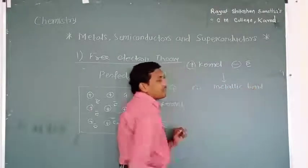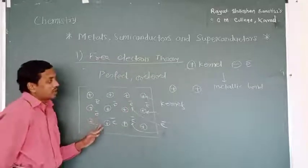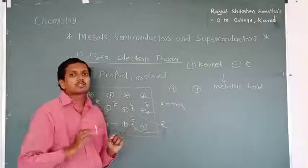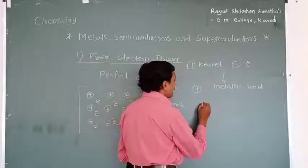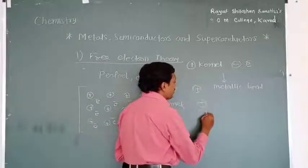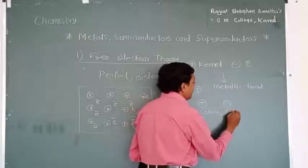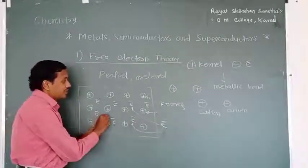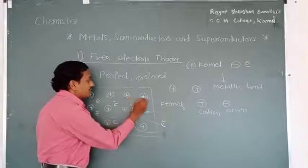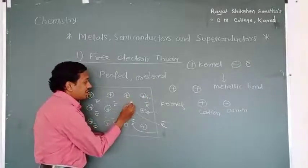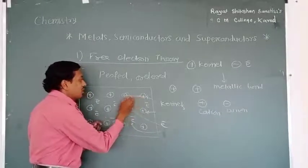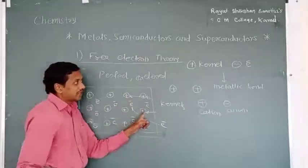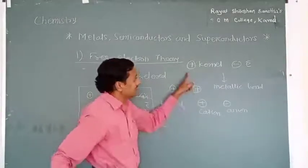One may get confused with ionic bond. The definition of ionic bond is the force of attraction between oppositely charged ions, meaning a force of attraction between a positively charged cation and a negatively charged anion. But here the situation is somewhat different — we have a force of attraction between a positively charged metal ion and a negatively charged electron, which is responsible for holding all the metal ions tightly together in the lattice of the metallic solid.